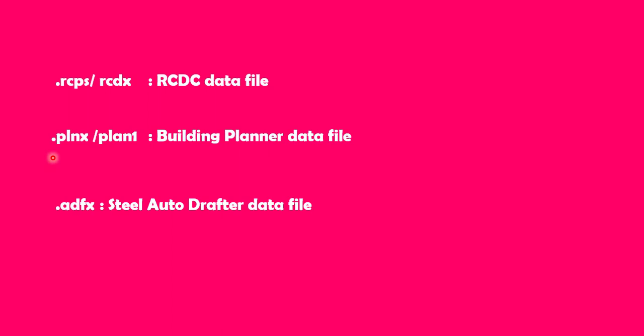If you have an RCDC model, that file extension will be in terms of .rcps or .rcdx. For the building planner data file, that will be in terms of .plnx or .plan1. The .adfx extension represents files which store the auto-drafter class file from analyses. In the newer Connect Edition version with Steel Auto-Drafter, that file extension will be in terms of .adfx. The .log extension represents the log file from the analysis engine.